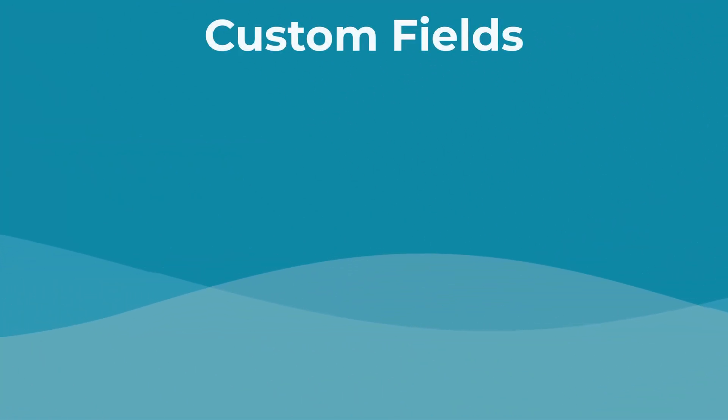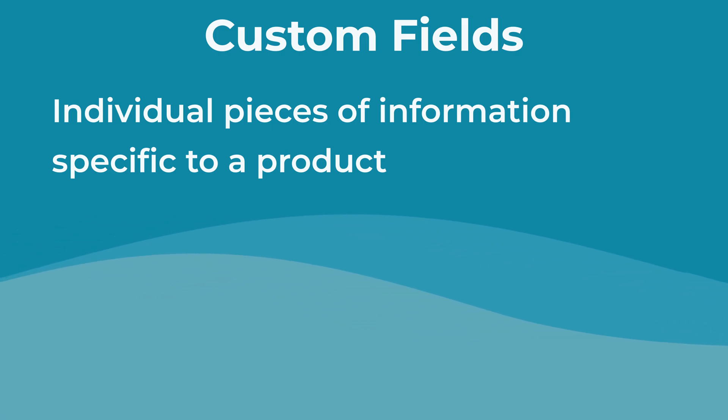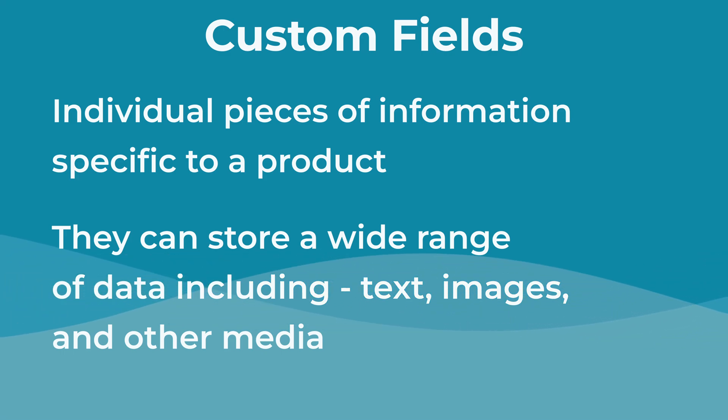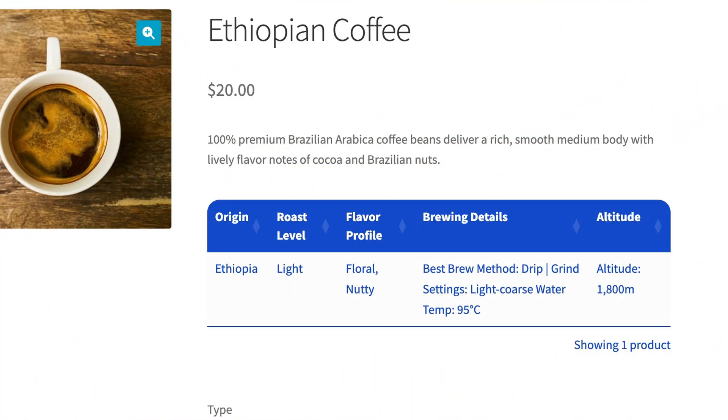Now, very quickly, let's talk about the difference between a custom field and a custom taxonomy. Custom fields, which are also known as post-meta, are individual pieces of information that can be added to your products in the edit screen for each product. They're flexible and can store a whole bunch of different data, including text, images, and other media. Note that they are unique to each product, so you're just going to update them on a per-product basis, and they're not meant to share information between products. I've used custom fields in my example to write in information like the brewing details for this particular type of coffee, as well as the altitude, as this is information which is not necessarily going to be shared across all my different products.